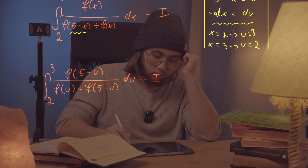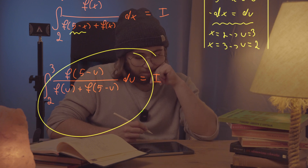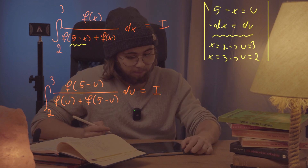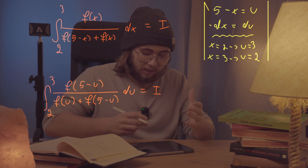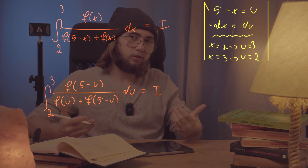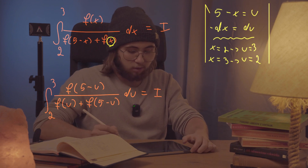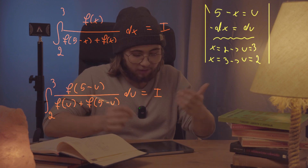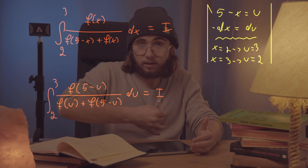So those two integrals are both equal to I. Now this integral is in terms of u, but the denominator — f of u plus f of five minus u — looks very similar to the denominator in the original integral: f of five minus x plus f of x. The only difference is the variable name: x versus u.